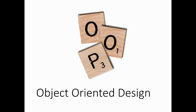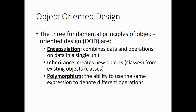Object-oriented design is another important part of the discussion. It's one of the reasons we use object-oriented programming, because it's very powerful for simulating and modeling the real world and making more complex programs. Three fundamental principles of object-oriented design are: encapsulation, which combines the data and the operations on the data into a single unit — the class; inheritance, creating new objects from existing objects; and polymorphism, which is the ability to use the same expression to denote different operations. We'll get to polymorphism a little bit later in the class.